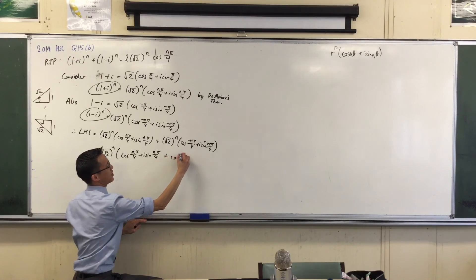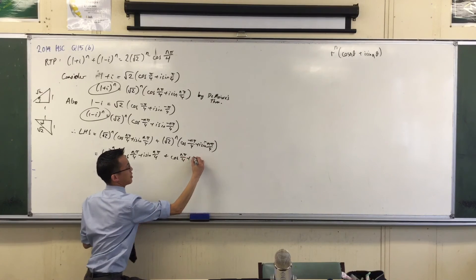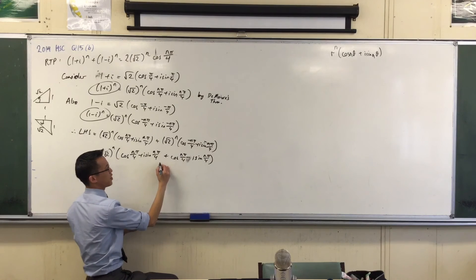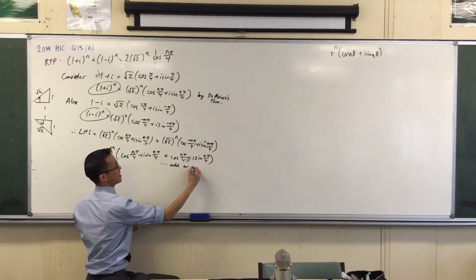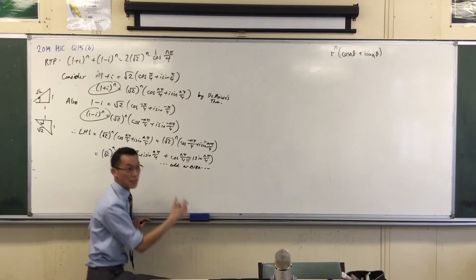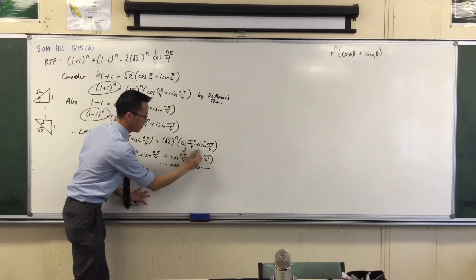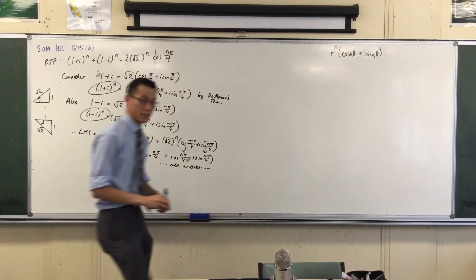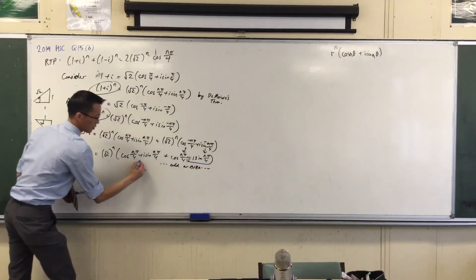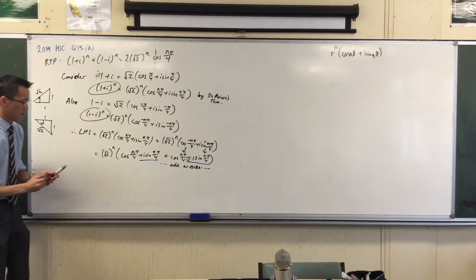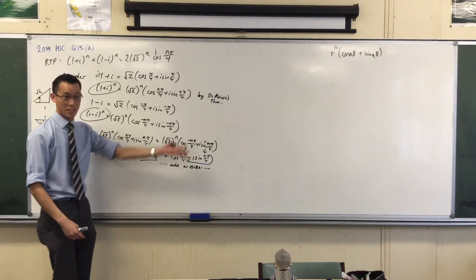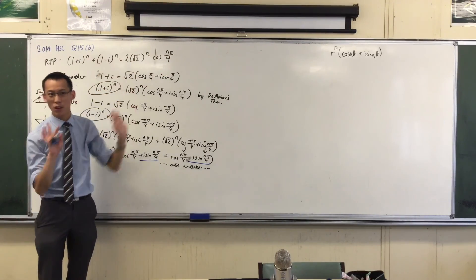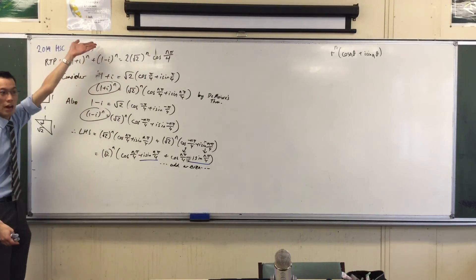So here we go. I've got a cos n pi on 4 plus, uh, minus, rather. n on 4, right? So I'm just hurrying because of time, but you should write here, you know, because, like, the reason why I can do this is because of the symmetry of those functions, and then you can see what happens. Cancel, cancel, cos n pi on 4 plus cos n pi on 4 is 2 cos n pi on 4. Are you happy? I'm not even going to write that line because it's just that line.